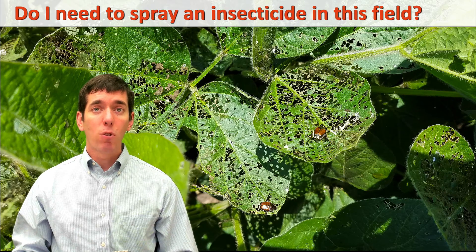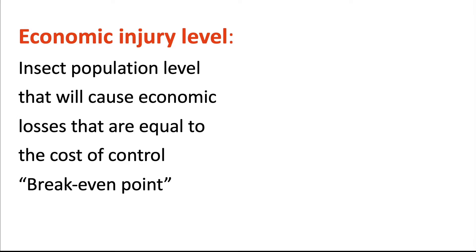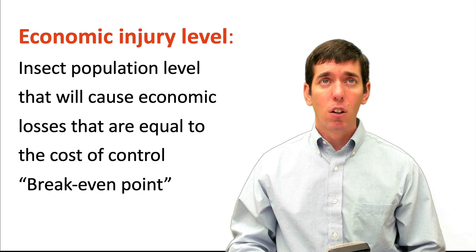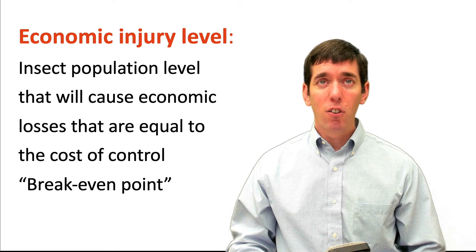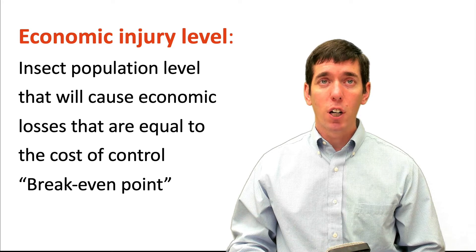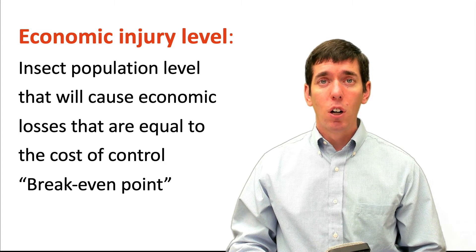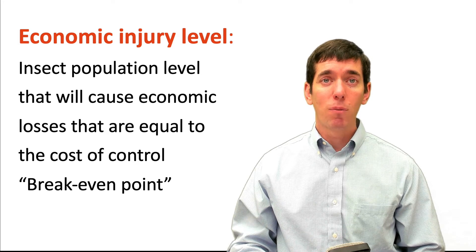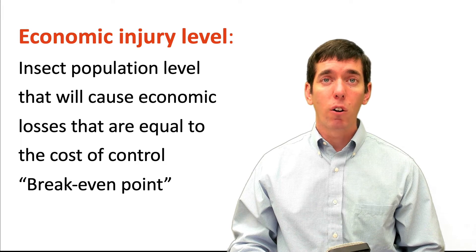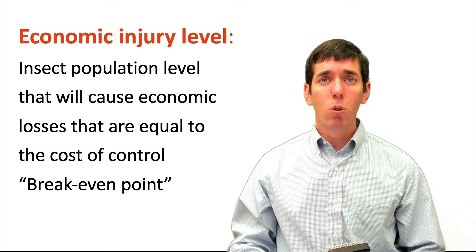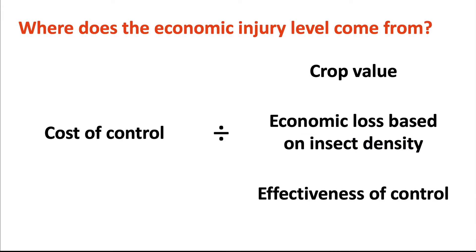There are a couple of levels we'll talk about when making this determination. The first is what's called the economic injury level, and that's the insect population level that's going to cause economic losses equal to the cost of control. You can think of this as the break-even point — where the damage from that insect, in terms of dollars, whether that's a loss in yield or in quality, is equal to the cost of control.